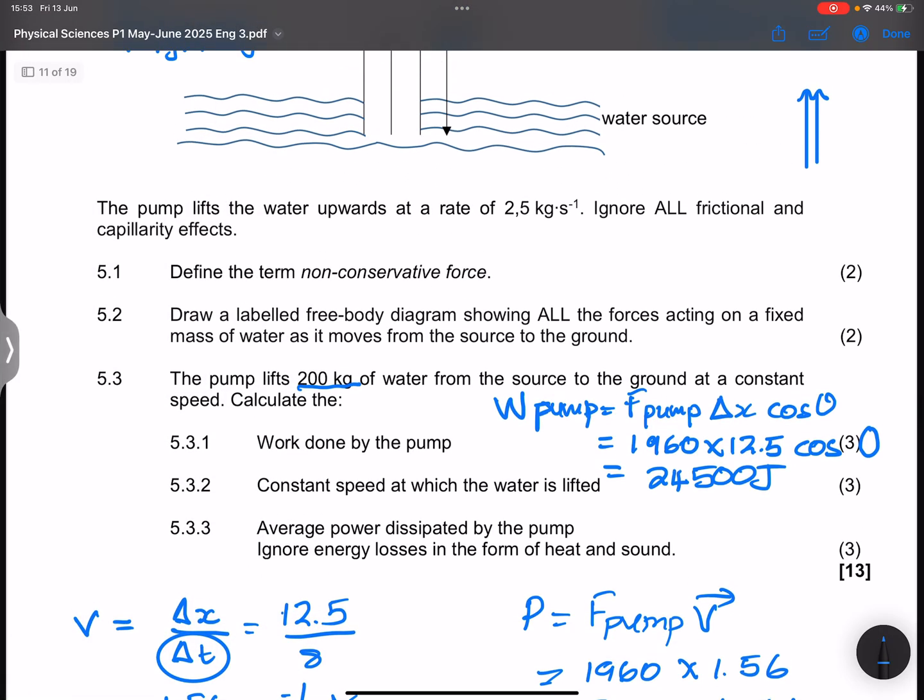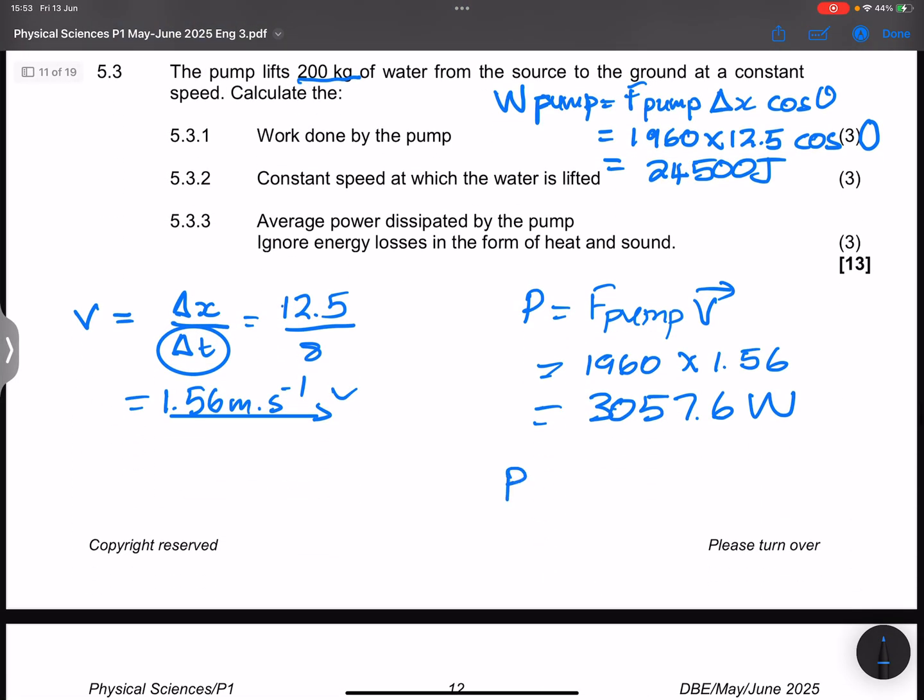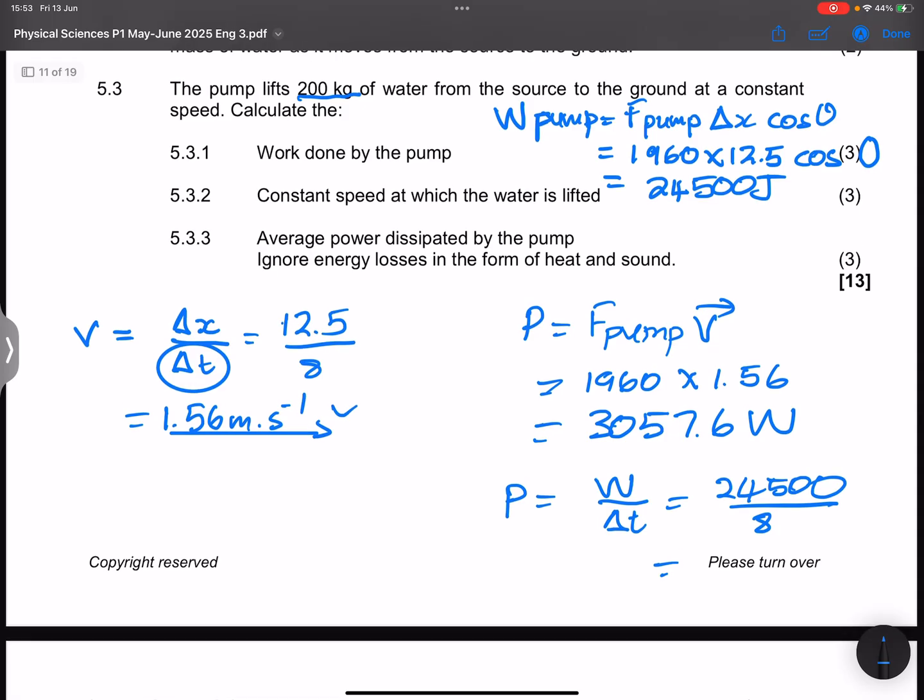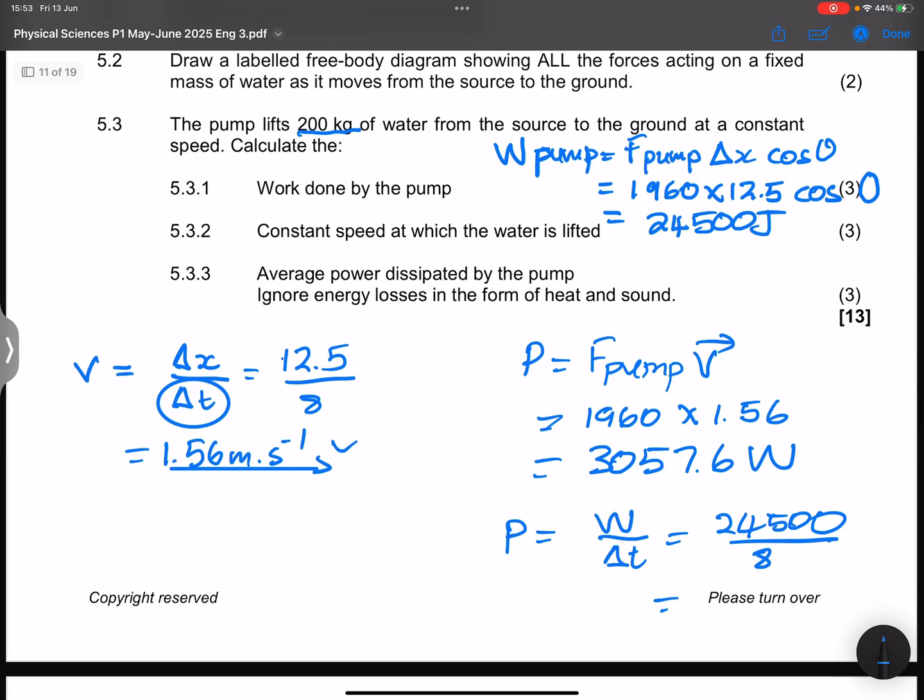Alternatively, we could have said that power is the rate at which work is done. So that's work done divided by time. And so that would have given us 24,500 divided by the time that it takes, which was 8 seconds. And we would be able to get the same amount of power.